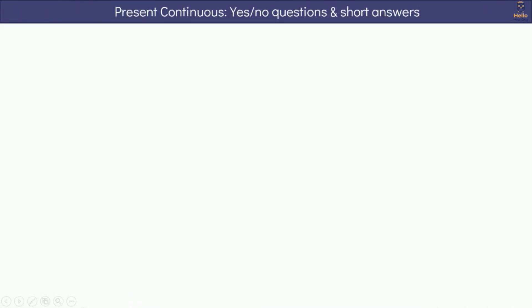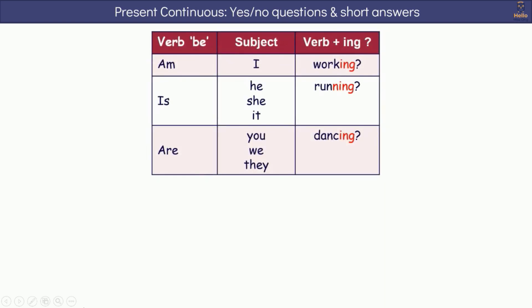Lastly, let's learn how to form yes-no questions in present continuous form. We form the questions like this: verb be, followed by subject and verb with -ing. Am I working? Is he, she, it running? Are you, we, they dancing?